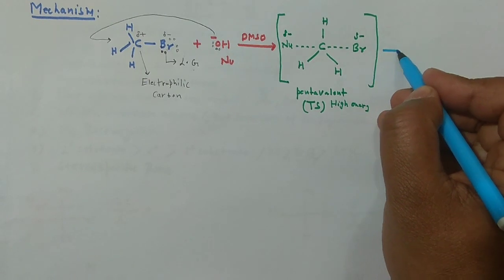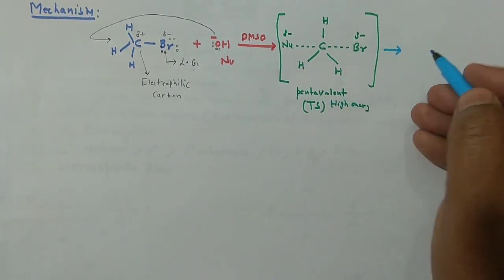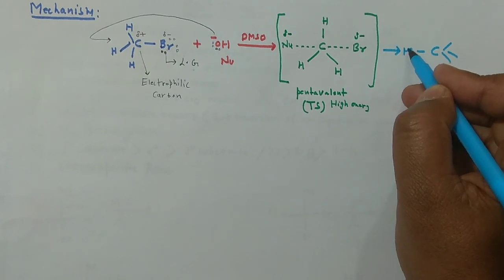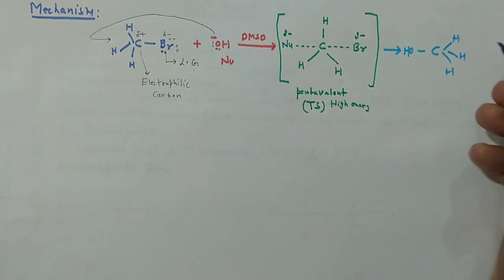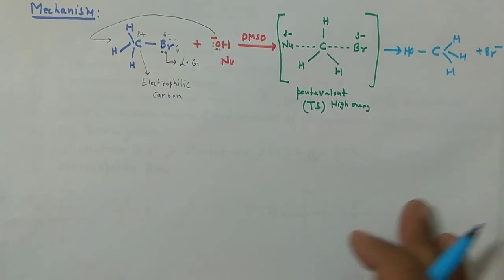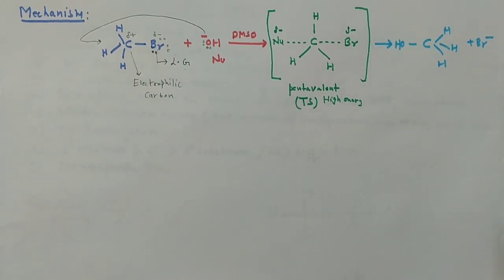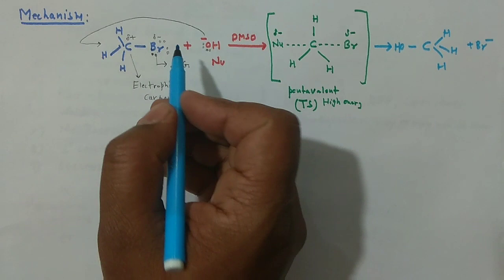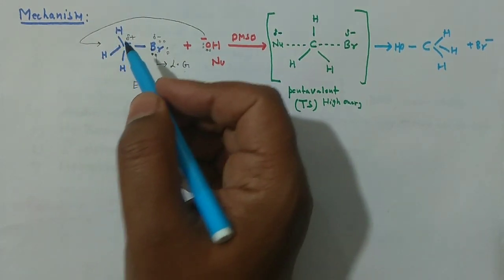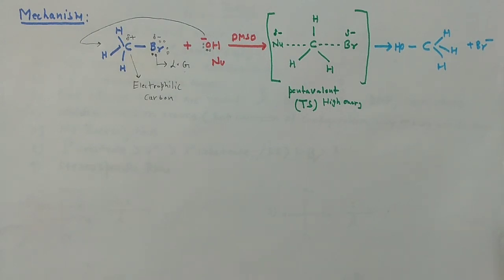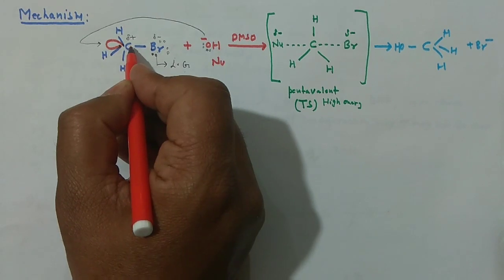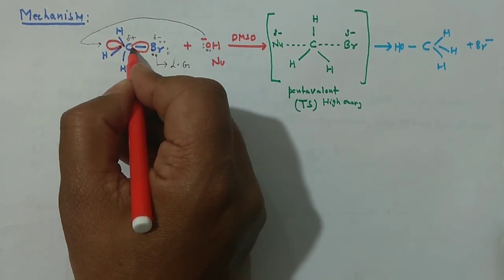Carbon normally has tetrahedral valency, but in this transition state it is pentavalent, making it a high-energy transition state. This transition state exists but no carbocation is formed. Finally, this pentavalent transition state collapses to give the product — OH on carbon with three hydrogens — plus Br⁻ as the leaving group.